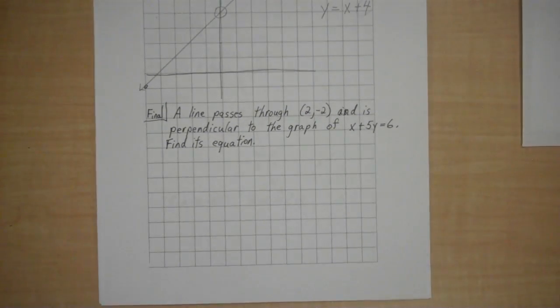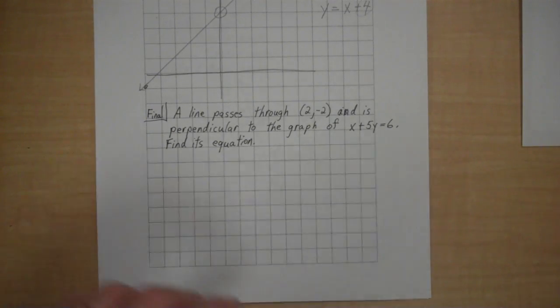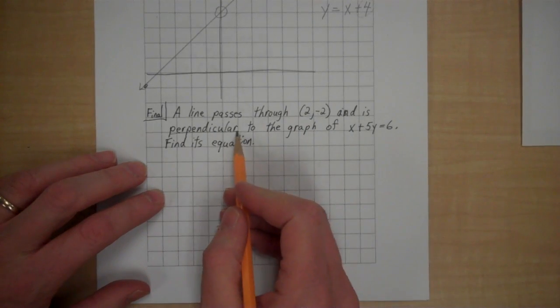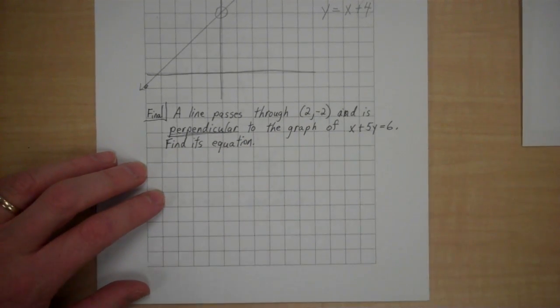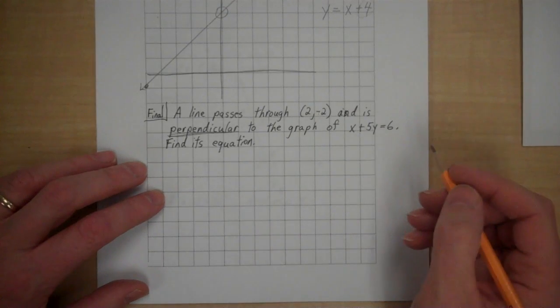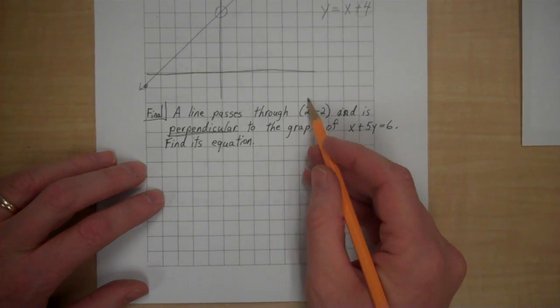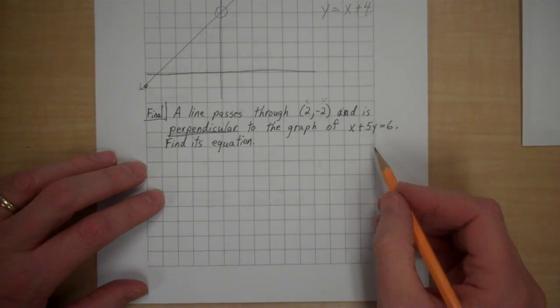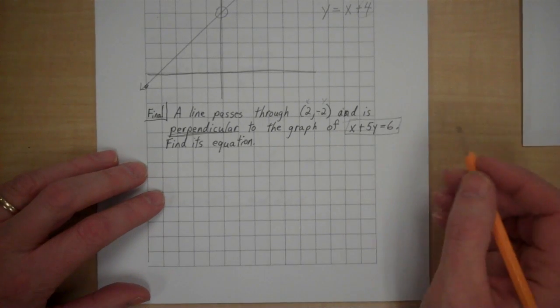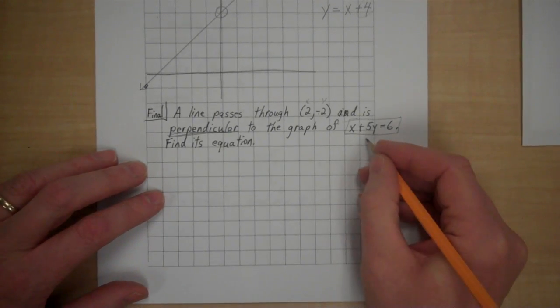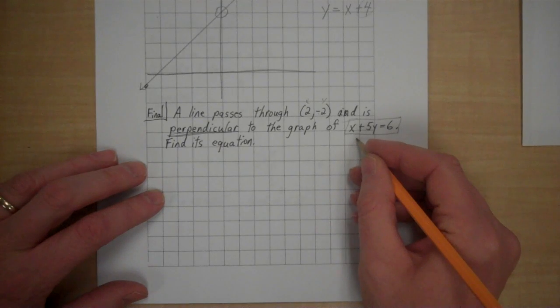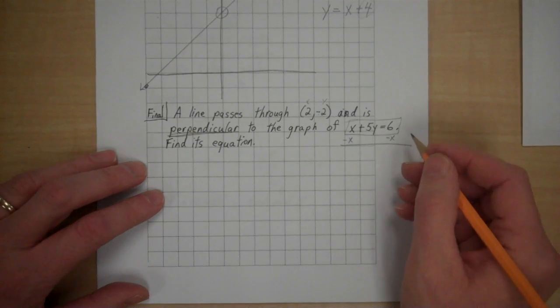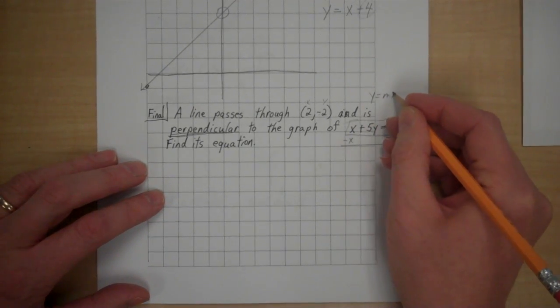Now, let's look at this final example. A line passes through (2, negative 2) and is perpendicular to the graph of x plus 5y equals 6. Find its equation. Alright. Well, I have an x and a y, so I'm going to go y equals mx plus b again. But I don't know what m is yet. And our clue is in here. If I could find the slope of this, well, I am going to solve for y.